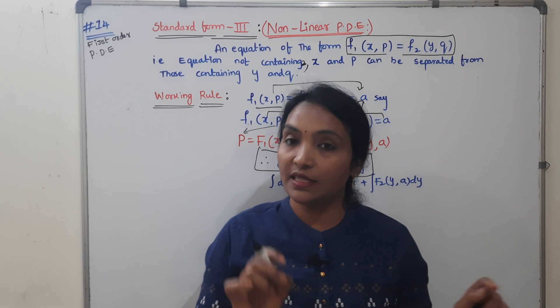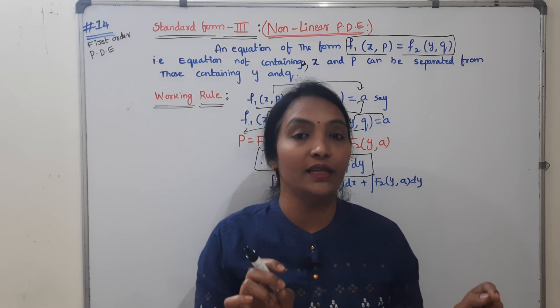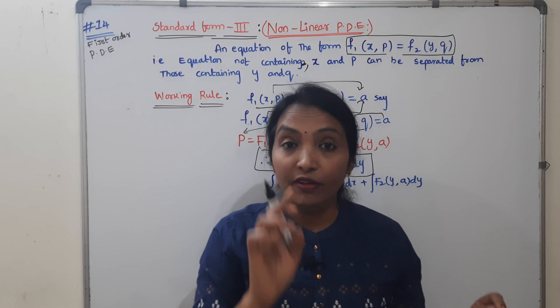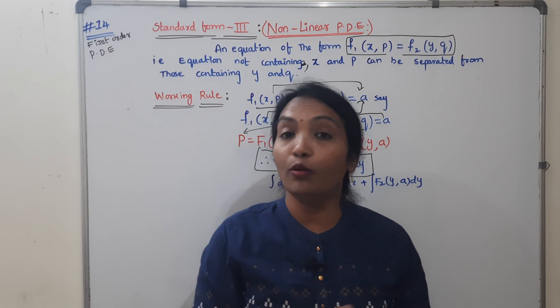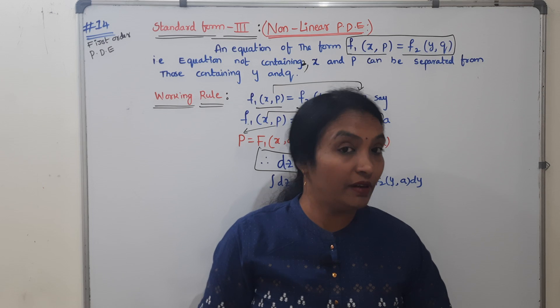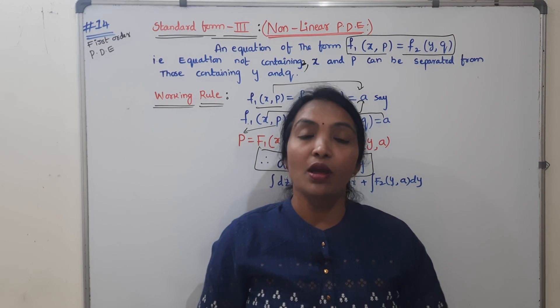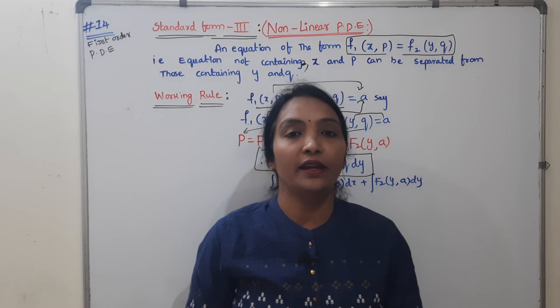Our rule is DZ equal to P DX plus Q DY. This is our formula. After finding P and Q and substituting, we will get the solution of Standard Form 3. Now let us look at the problem. If you have any problem, it will be applied in Standard Form 1, 2, or 3 — we will identify which one.